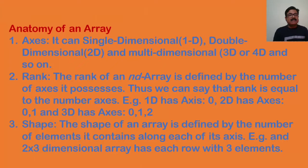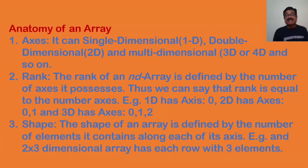This is the anatomy of an array. There are three things: axes, rank, and shape. Axes means how many axes there are — like the x-axis and y-axis in a mathematical graph. A single dimension has one axis only, a 2D array has axis zero and one, and a 3D array has three axes: zero, one, and two. Shape is defined by the number of elements along each axis — for example, a 3-by-3 array will contain three elements in each row.